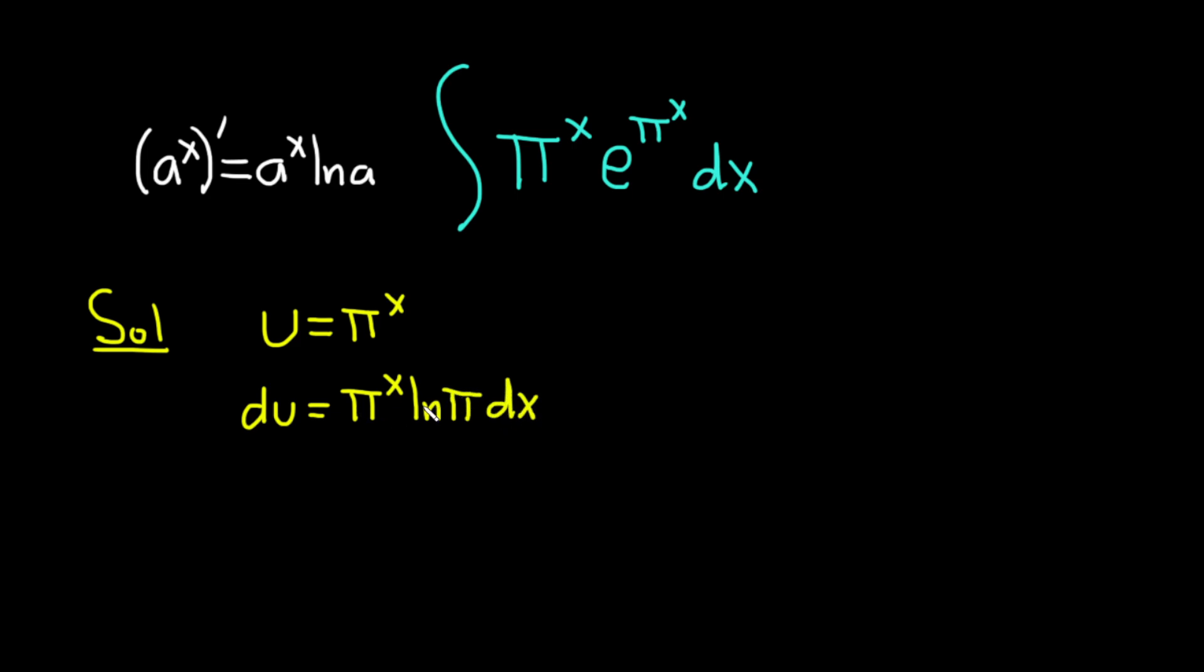This notation we're using here, by the way, is called differential notation. Normally you would say du/dx is equal to π to the x ln π, right, if you just took the derivative of u with respect to x. But here you notice the dx is on the right-hand side. So it's just another way of taking derivatives. Basically it's like we're multiplying by dx. So this is equivalent to what we have here. It's the same thing, just different notation.